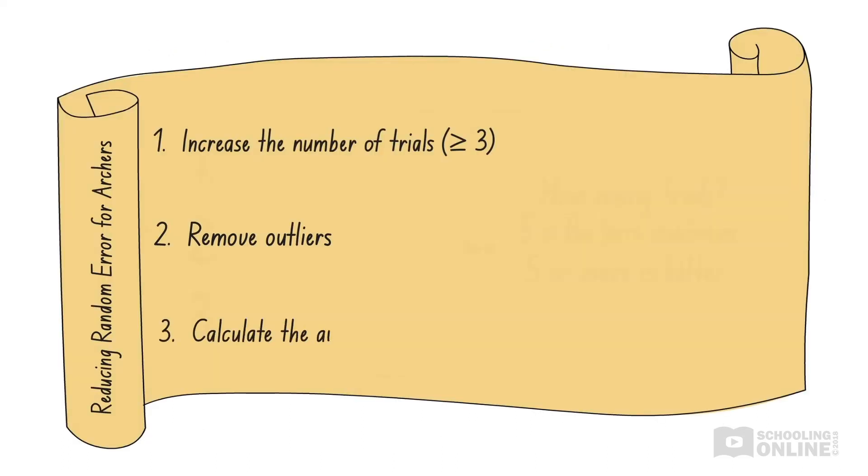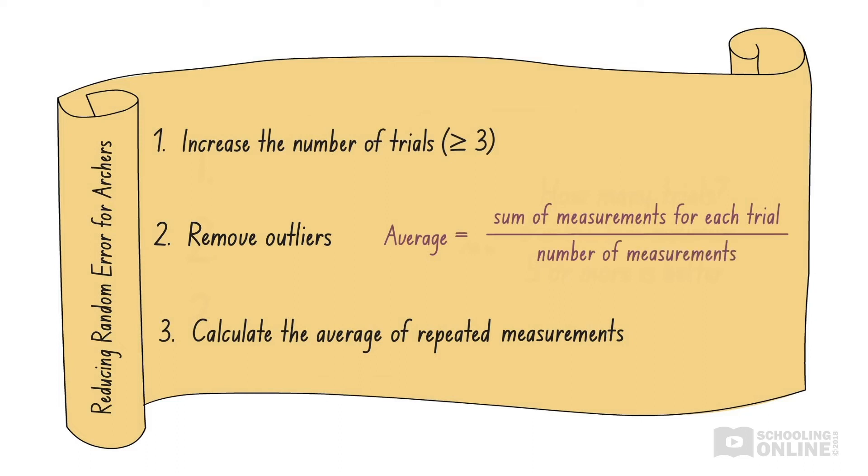This brings us to the third method of reducing the effects of random error, which is to calculate the average of repeated measurements. The average is calculated by taking the sum of all the measurements for each trial and dividing by the total number of measurements.